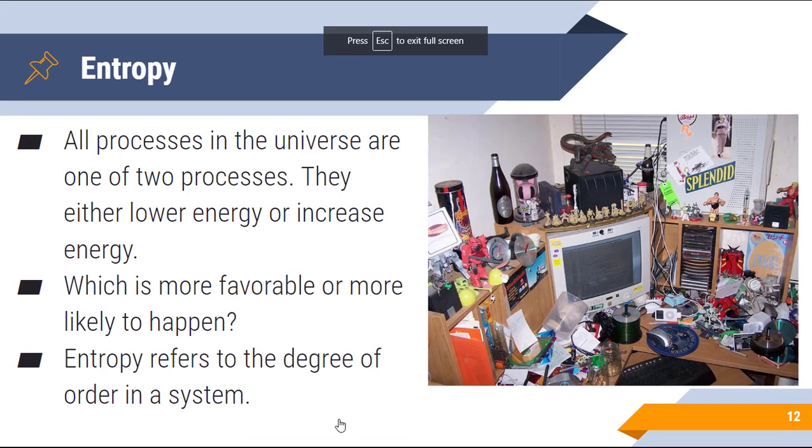So the last couple things I actually want to talk about are about the concept of entropy. Now all processes in the universe are essentially one of two processes. They either lower the energy or they increase the energy. So think about which is more favorable or more likely to happen spontaneously. Is something more likely to spontaneously just randomly gain energy into the system or lose it? And if you really think about concepts of laws of conservation of energy, you realize that the odds are you're more likely to lose energy in a spontaneous reaction than you are to gain energy.